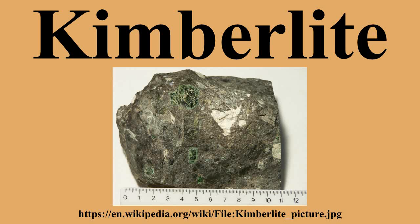The morphology of kimberlite pipes generally includes a sheeted dike complex of tabular, vertically dipping feeder dikes in the root of the pipe, which extends down to the mantle. Within 1.5 to 2 kilometers of the surface, the highly pressured magma explodes upwards and expands to form a conical to cylindrical diatreme, which erupts to the surface. The surface expression is rarely preserved, but is usually similar to a maar volcano.